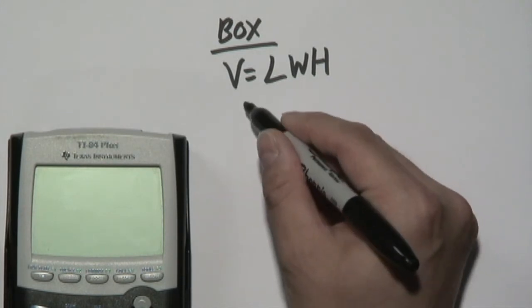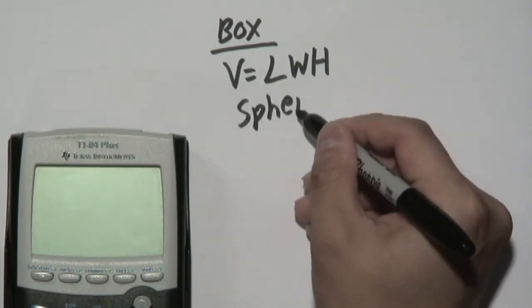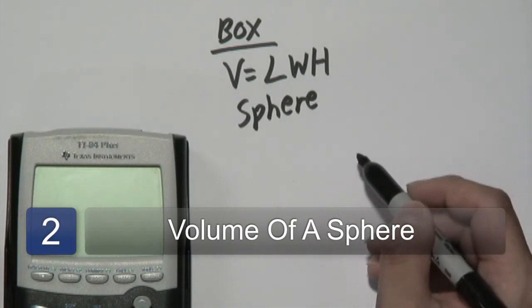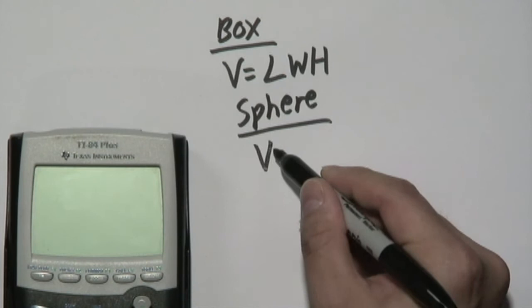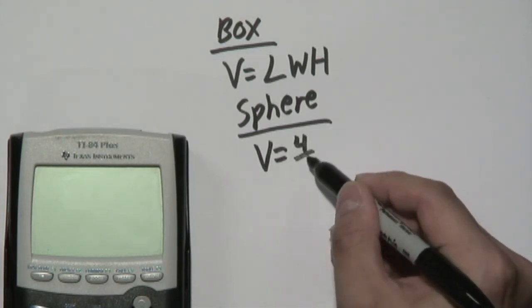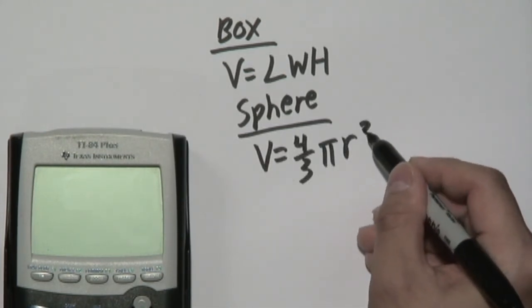Another common shape is that of a sphere, for example like a baseball, basketball, anything that's considered round. The formula for that is volume equals four-thirds pi r cubed.